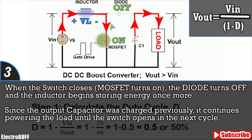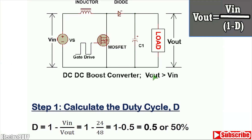On the third stage, the MOSFET turns on again, the diode turns off, and the inductor begins storing charge again. Because the capacitor C1 was charged, it will continue to provide power to the load while the inductor is charging, and the process repeats over and over again many times per second. The output voltage is always greater than the input voltage.